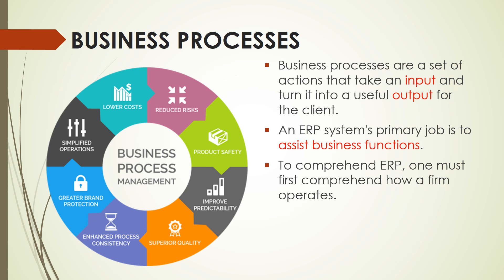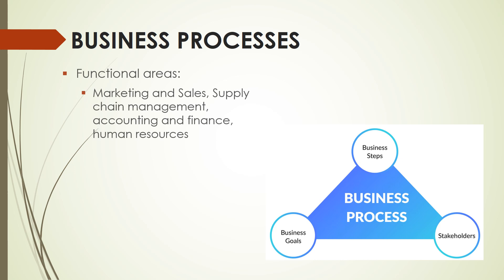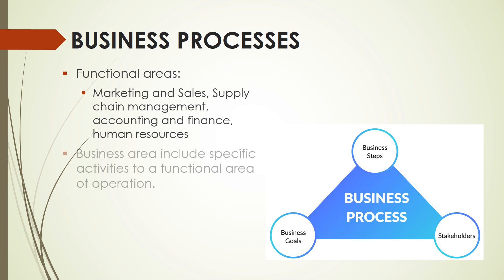On the left side of the screen, you will see the different benefits of having an established business process, including simplified operations, greater brand protection, enhanced process consistency, superior quality, improved predictability, product safety, reduced risk, and lower cost. Categories of business processes include operational and business process. The functional areas include marketing and sales, supply chain management, accounting and finance, human resources, and the like. Business area includes specific activities to a functional area of operation, including the business steps, the stakeholders, and the goals of the enterprise.